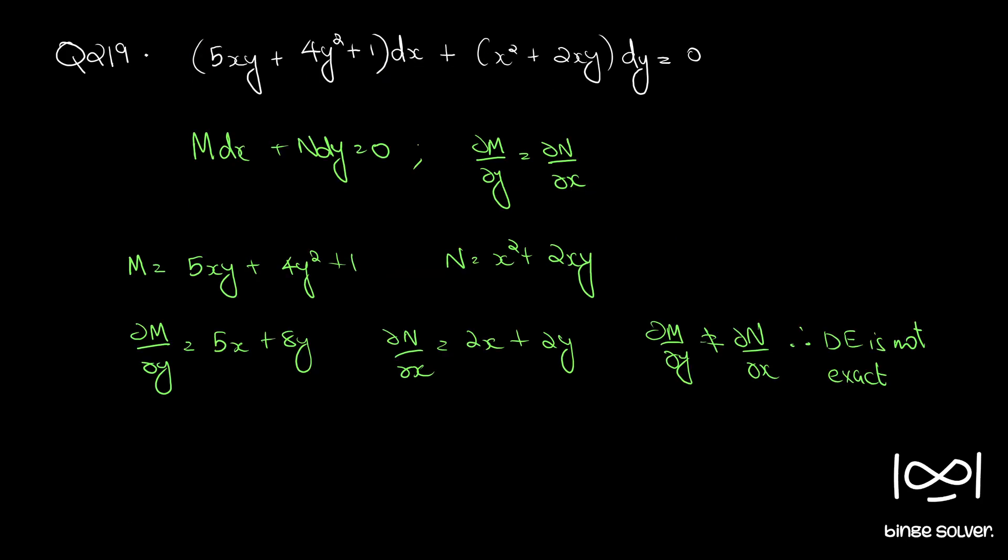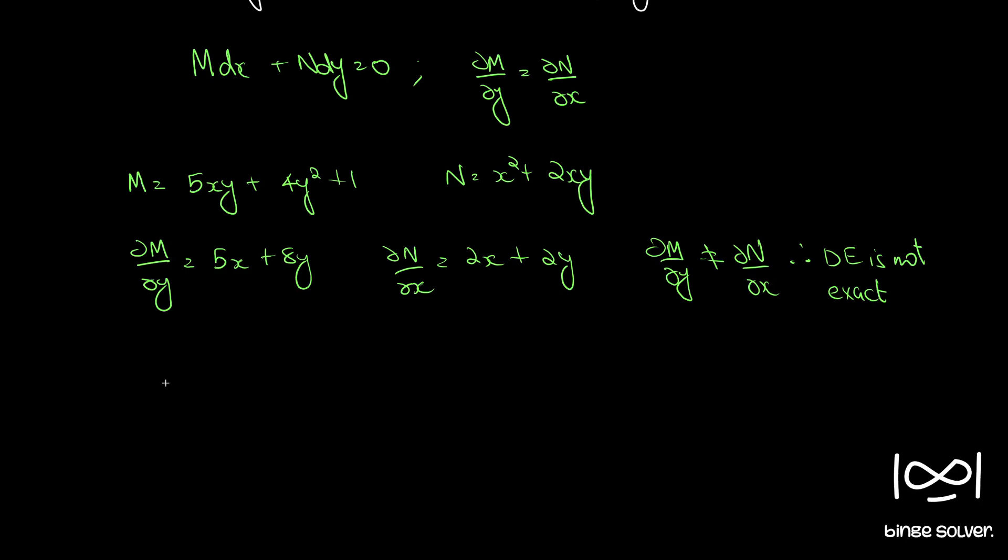Now we have to find the integrating factor to convert the differential equation to an exact equation. So that either rule 4 or rule 5 applies here. We will find the difference first, dou M by dou y minus dou N by dou x.